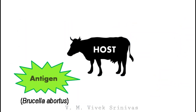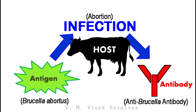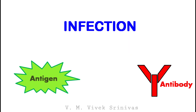For example, the bacterial organism Brucella abortus, which causes abortion in cattle. In this regard, the body raises, that is, produces specific anti-Brucella antibody as a protective mechanism against Brucella antigen. So the presence of infection can be serologically identified by either detecting the presence of antigen, or by detecting the presence of specific antibody which is raised against the particular antigen.